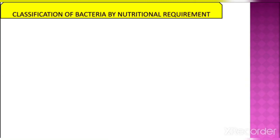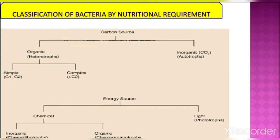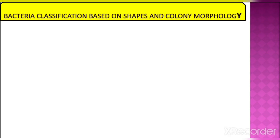Classification of bacteria by nutritional requirements. Carbon source and energy source are the two main important sources for bacterial growth. Based on carbon source, there are two types: organic and inorganic. Organisms using an organic carbon source are known as heterotrophs, and those using an inorganic carbon source are known as autotrophs. Based on energy source, organisms using chemical energy are known as chemotrophs, and those using light as energy source are known as phototrophs. Chemical energy is further divided into inorganic — chemolithotrophs — and organic — chemo-organotrophs.